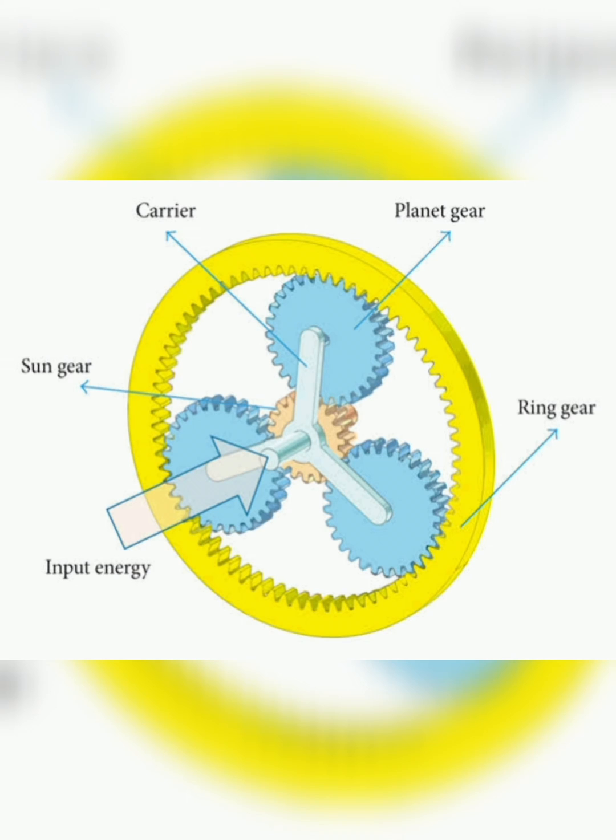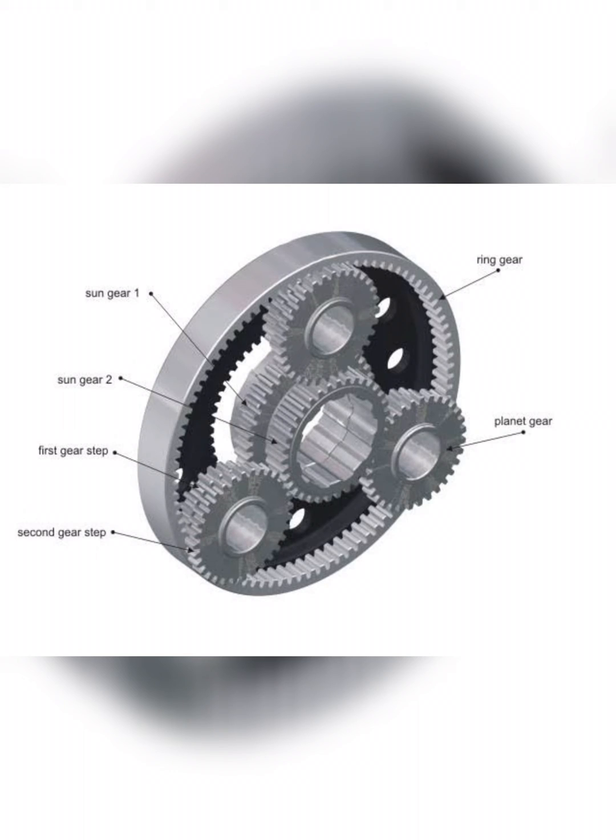As the sun gear turns, it causes the planet gears to rotate in place along the inside of the ring. This motion in turn rotates the output shaft in reverse direction.